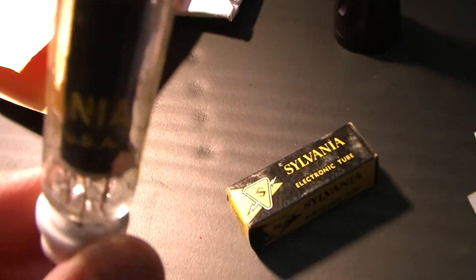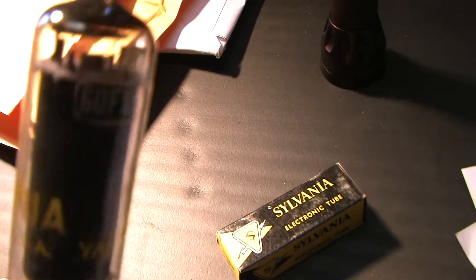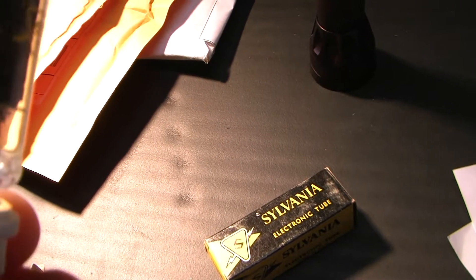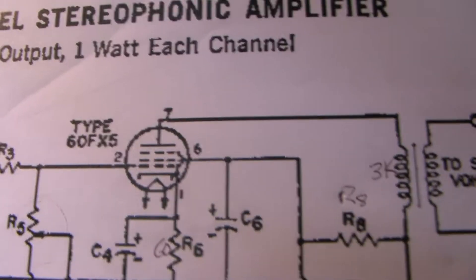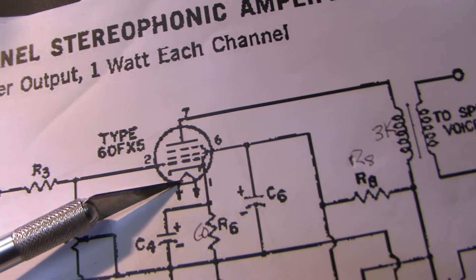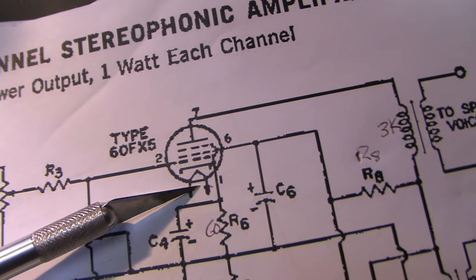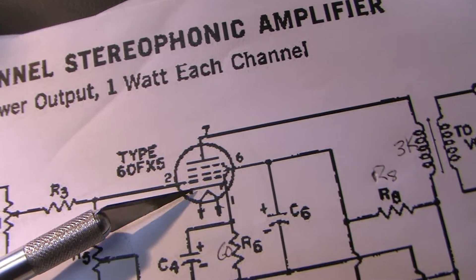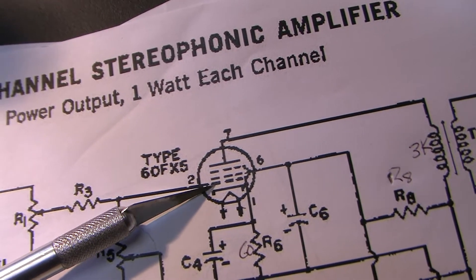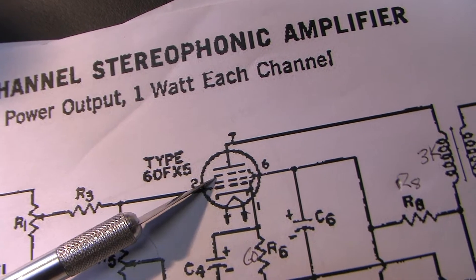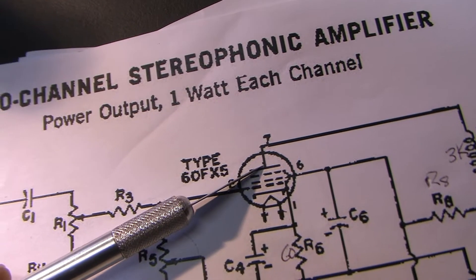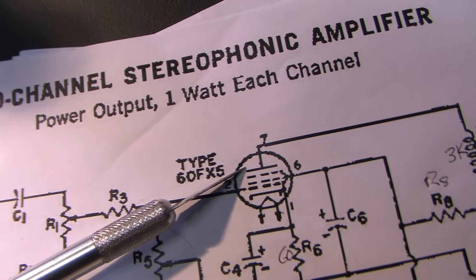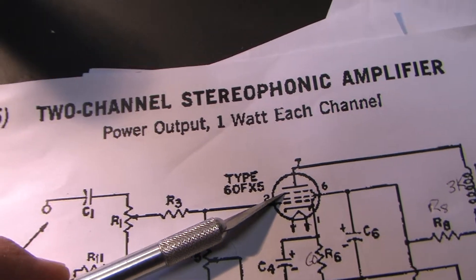And again, they're the only vacuum tubes in the circuit. They are pentodes. As you can see, they have a separate heater, cathode, control grid, screen grid, plate, and suppression grid I think that's called.